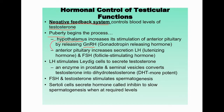The hypothalamus is always directly tied to the master gland, the pituitary gland. GnRH — gonadotropin-releasing hormone — causes the anterior pituitary (the front part of the pituitary) to release LH, or luteinizing hormone, and also FSH, or follicle-stimulating hormone.